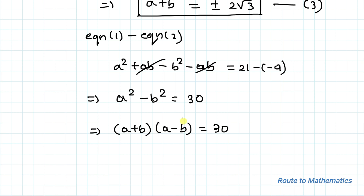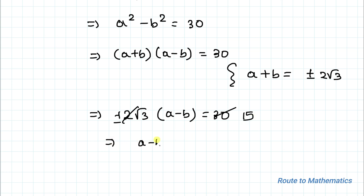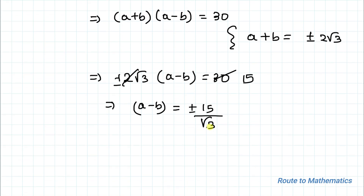From equation 3, we have a + b = ±2√3. So this implies ±2√3 multiplied with (a - b) = 30. By cross multiplication, 2 and 30 simplify to give a - b = ±15/√3, but since we have a radical in the denominator, we need to rationalize.